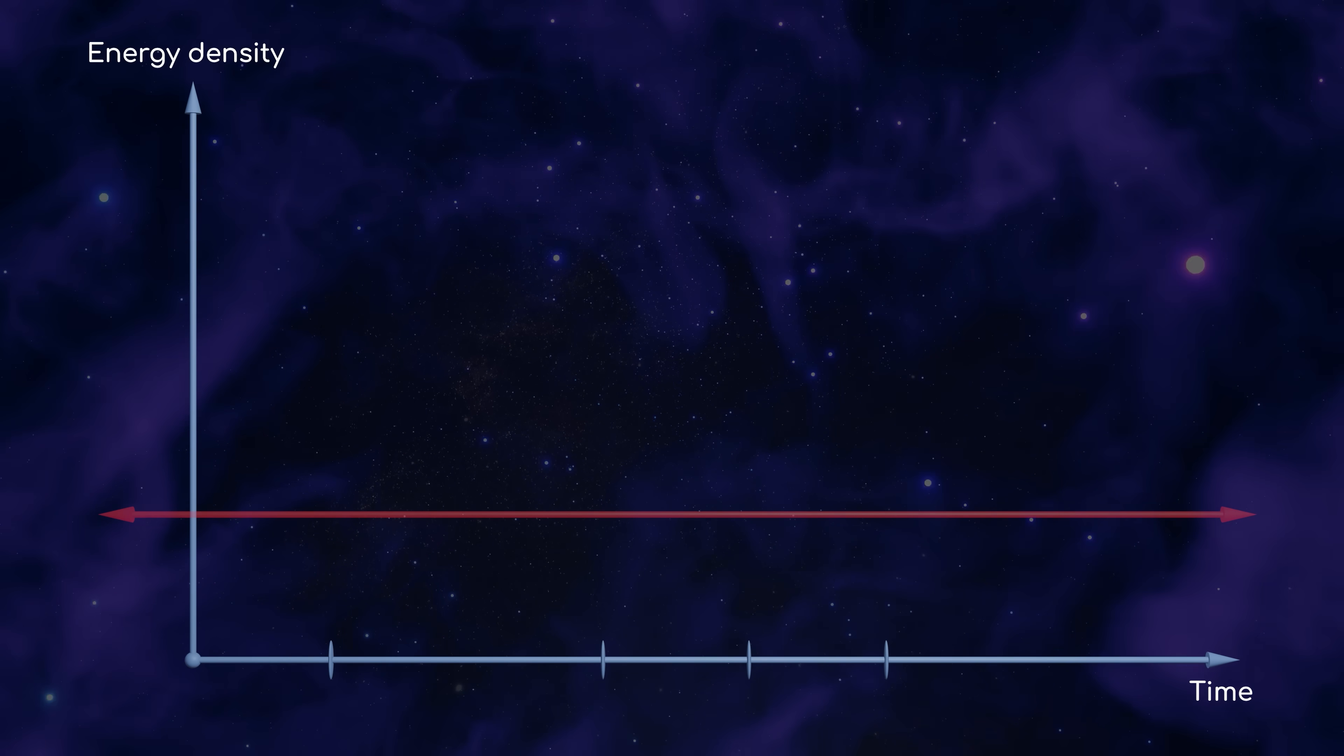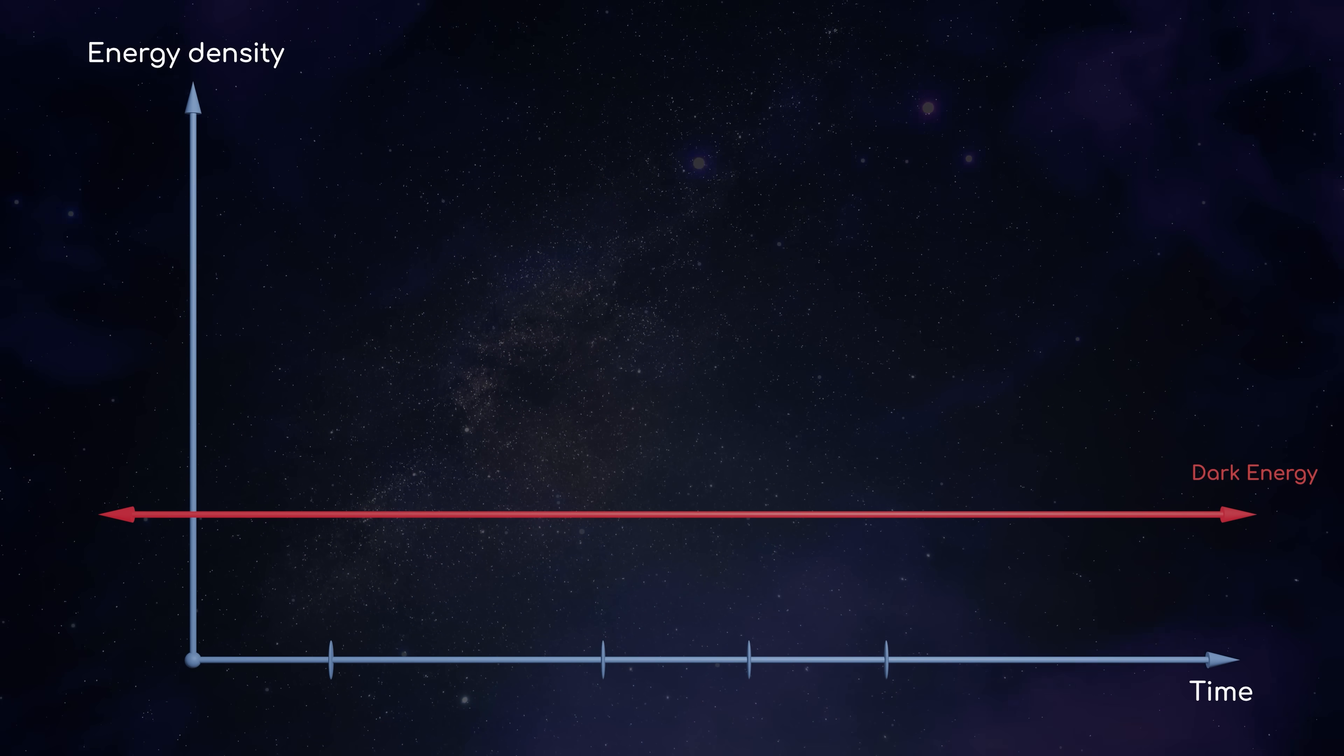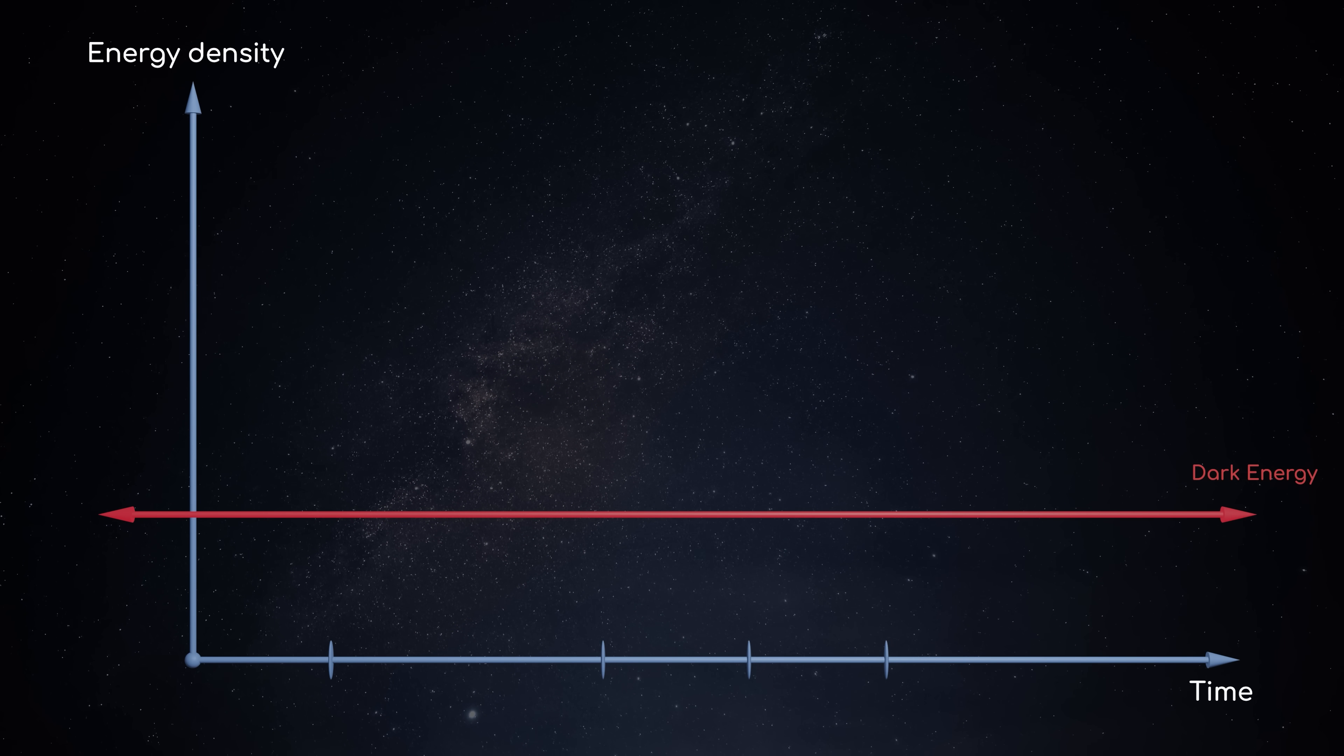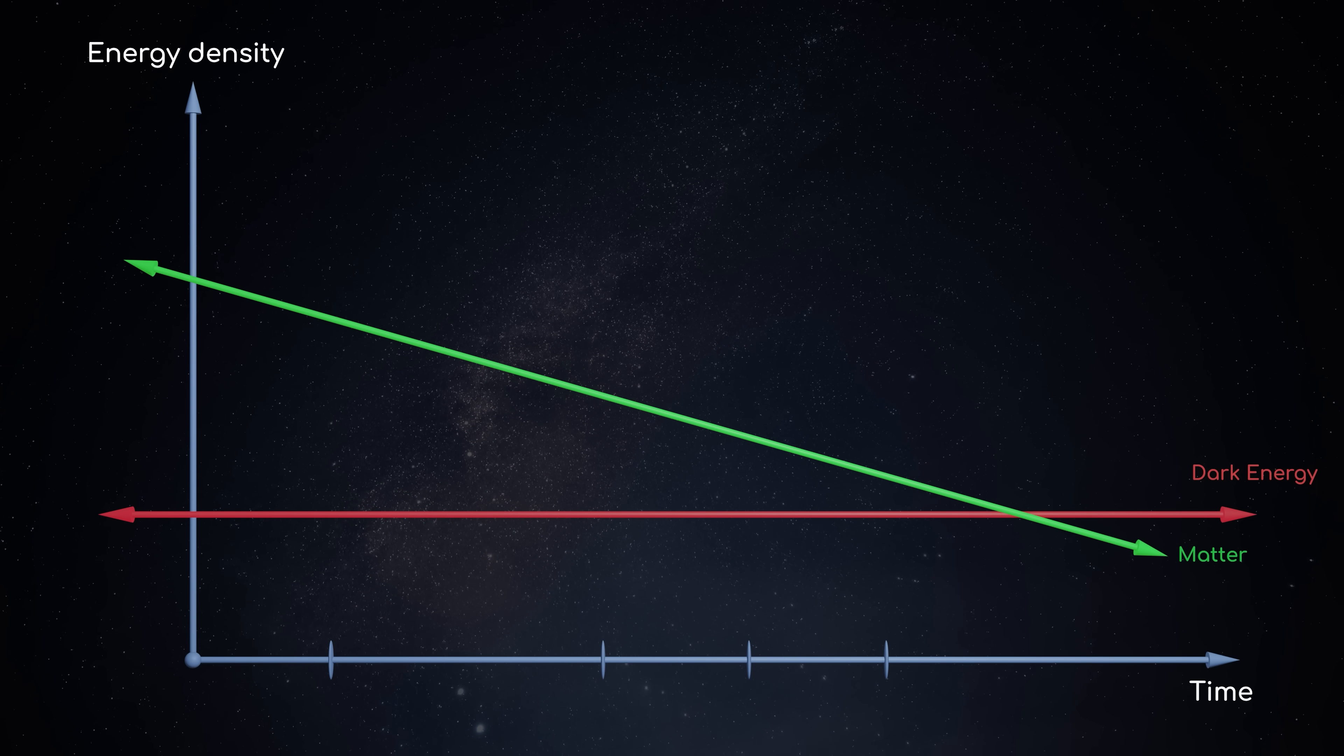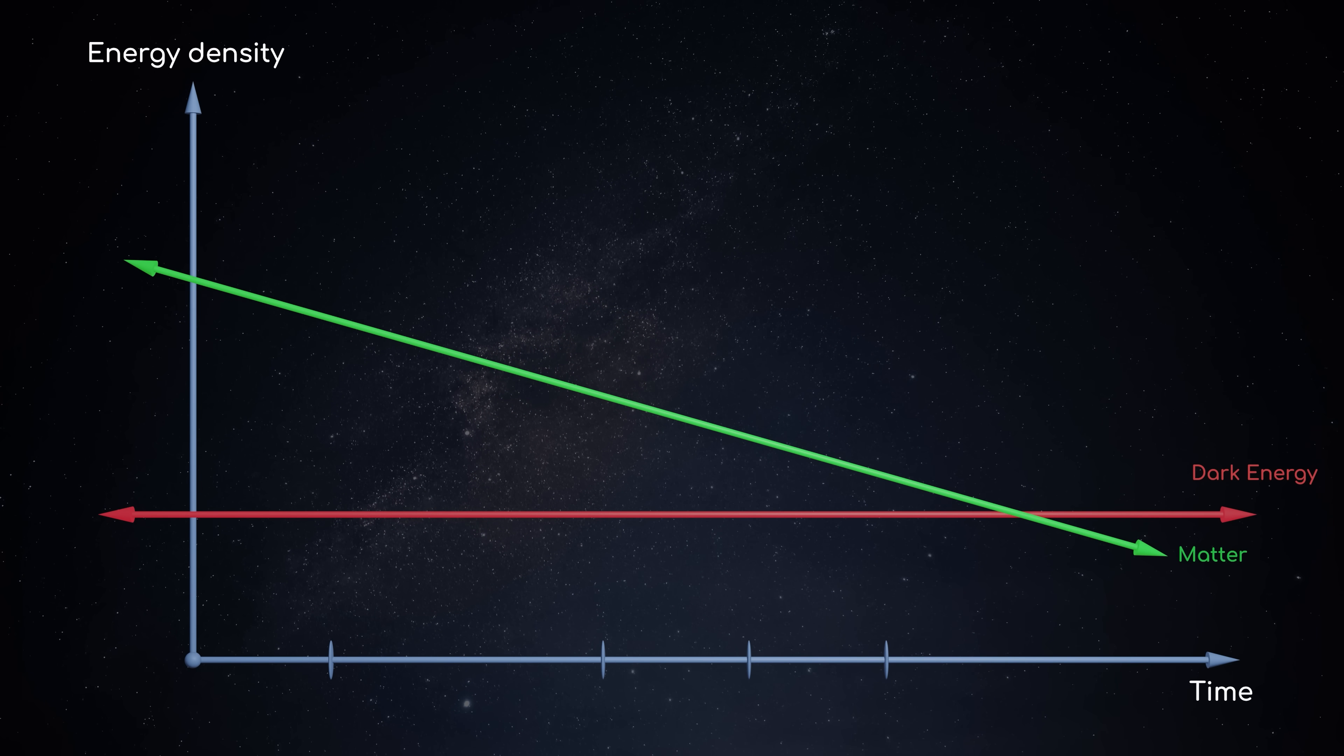This is the dark energy density measured by astronomers. Scientists believe its negative pressure has kept this density roughly constant for billions of years. This is the density of ordinary matter in the universe, which has little to no pressure. The density decreases over time because the expansion of the universe dilutes the matter within it.